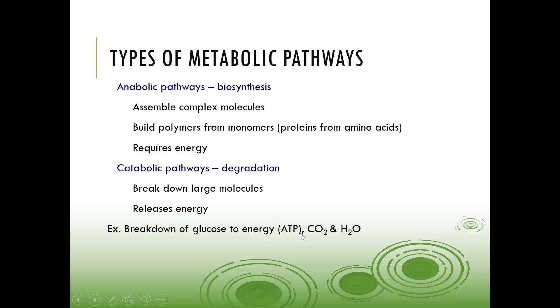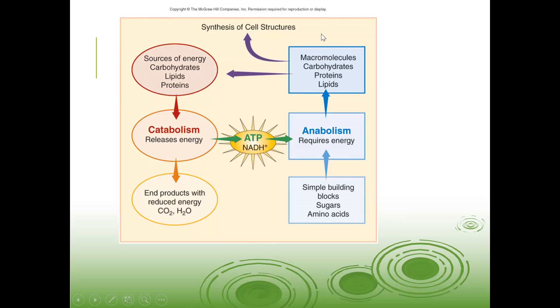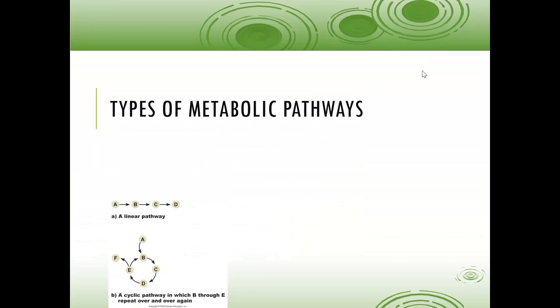We're breaking down that glucose to energy. The synthesis of cell structures, the making of cell structures. We have macromolecules which we learned about in our chemistry unit: carbohydrates, proteins, and lipids. We know amino acids are the building blocks for proteins. Three fatty acids plus triglycerol makes up a lipid. Carbohydrates are your building blocks for starches. Anabolism requires energy. So here we go from bottom to top, simple things are made into larger things. Requires energy. End products here, you have CO2 which is your waste. That exhalation is where that waste is gotten rid of. Catabolism is that release.